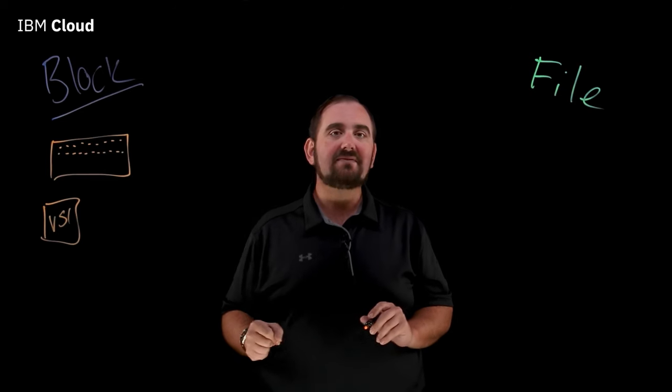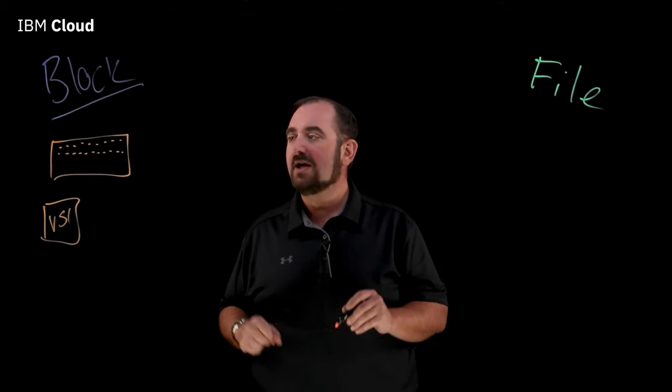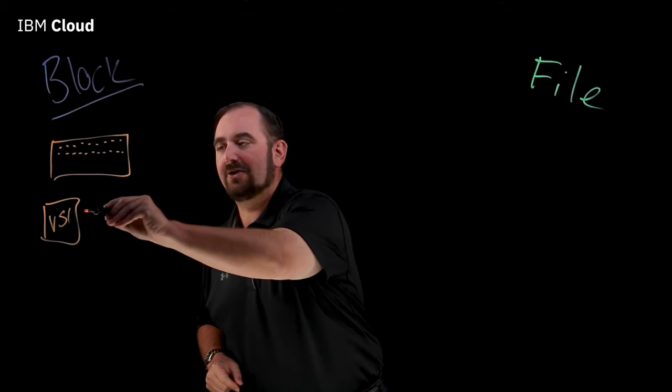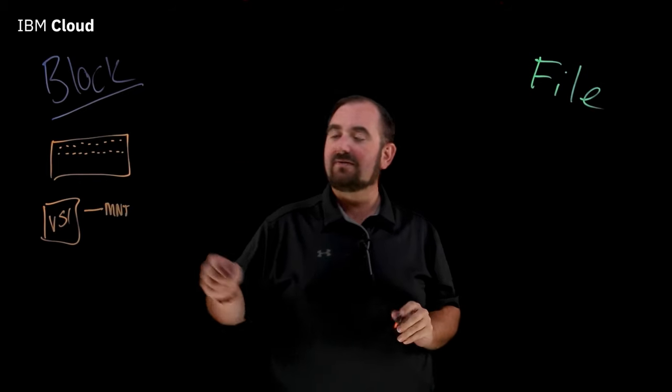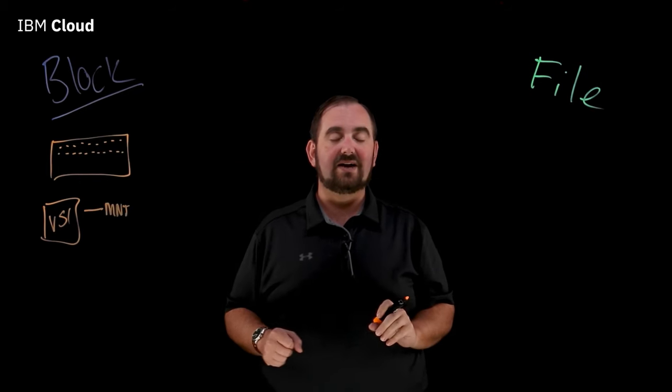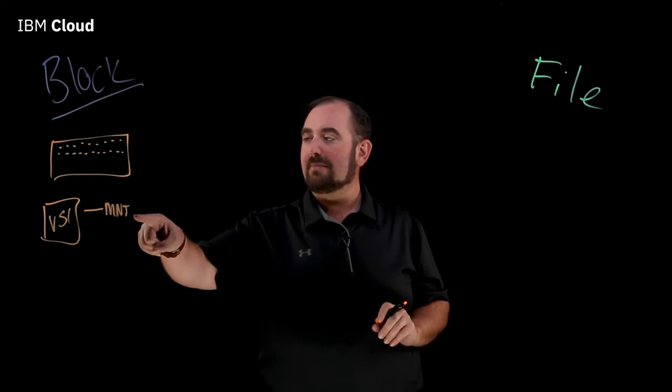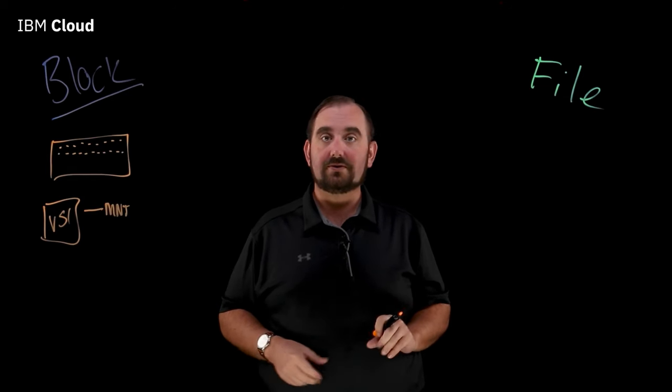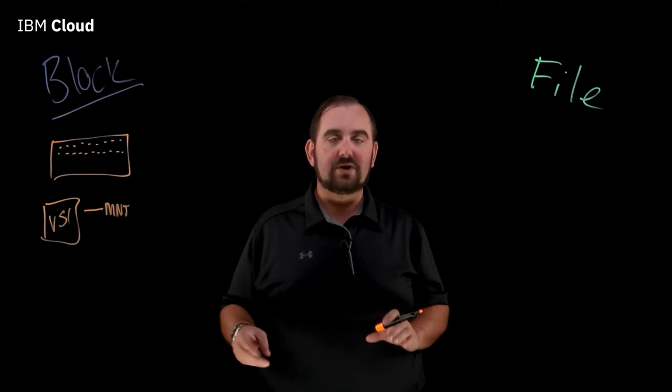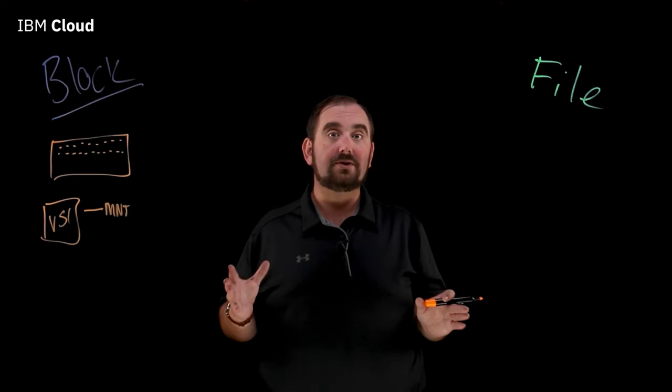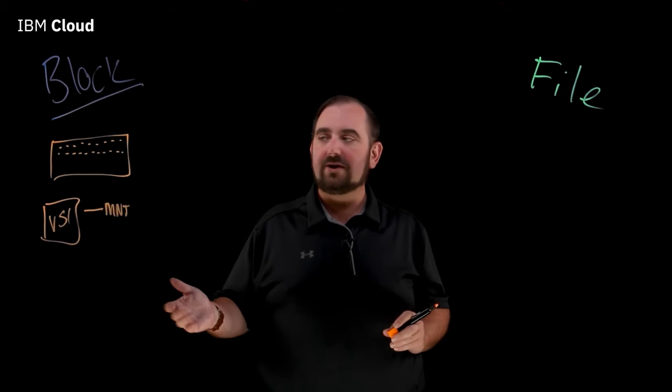And so a block device can actually be mounted to this virtual server in two different ways. The first is it can be mounted directly via a mount point MNT. So when you order a block device you're going to get a little mount point that goes along with it. It can be mounted to your virtual server using Windows or Linux whatever your preference is. You just put in the address, the proper security information and you can mount it and then you can start using it. You have to apply a file system obviously but away you go.